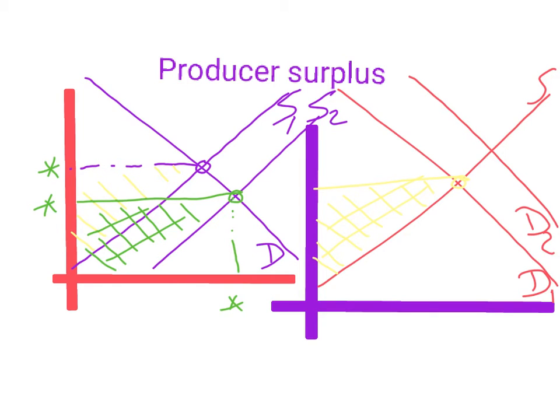And let's do another triangle, we'll make it green. Now the producer surplus is from here, it's the green area now.